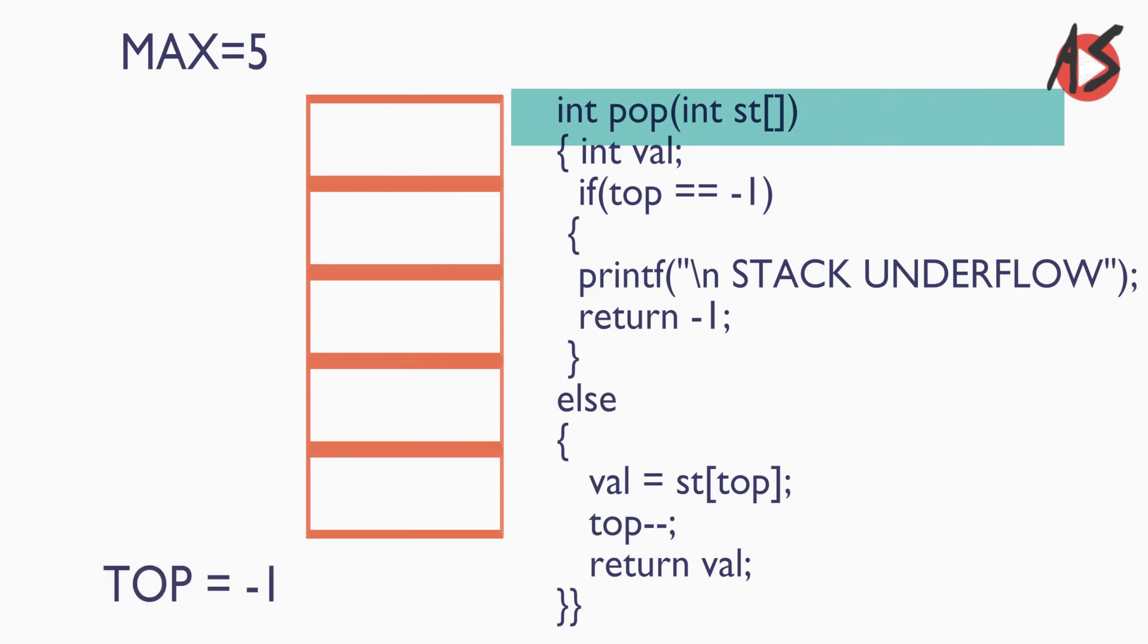If now we go for the pop element, our condition top equals minus 1 becomes true and we get stack underflow message. This is how two important operations push and pop work in the stack.